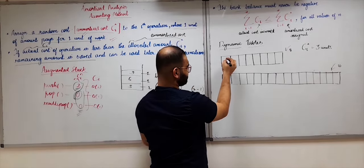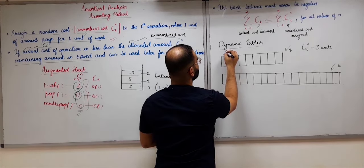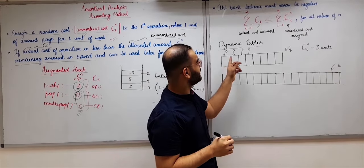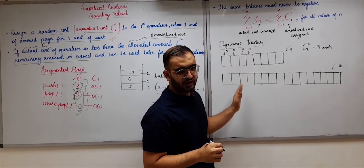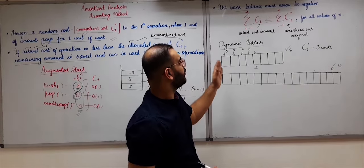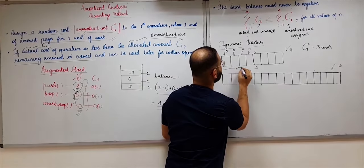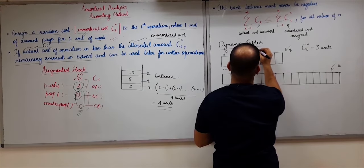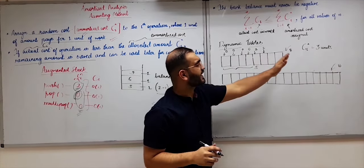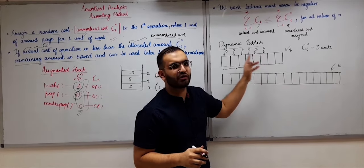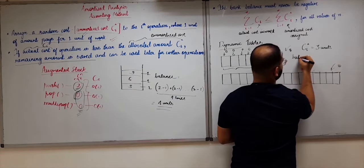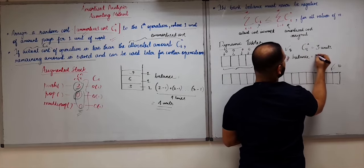For the first four insertions the balance is 0 each — if you watched the previous video you'll understand why. For the fifth insertion we have to copy all four previously inserted elements, so the balance remains 2. For the 6th, 7th, and 8th insertions the balance also remains 2 each time, since we assigned 3 units but only 1 unit is used (no overflow). So the total balance until now is 8 units.